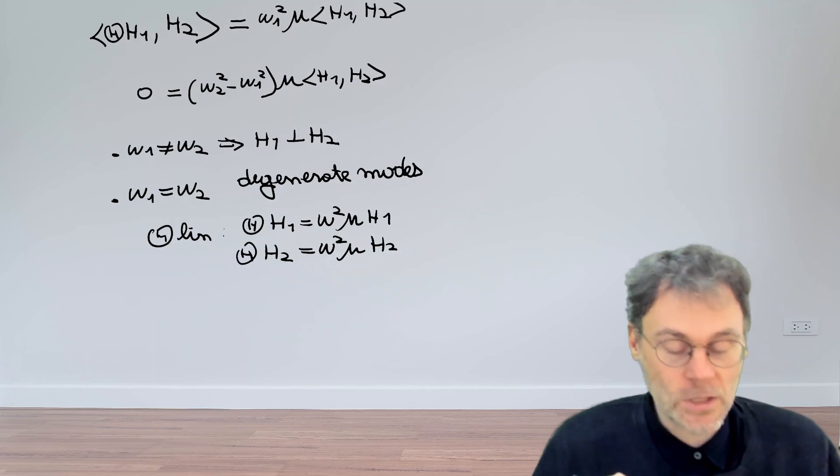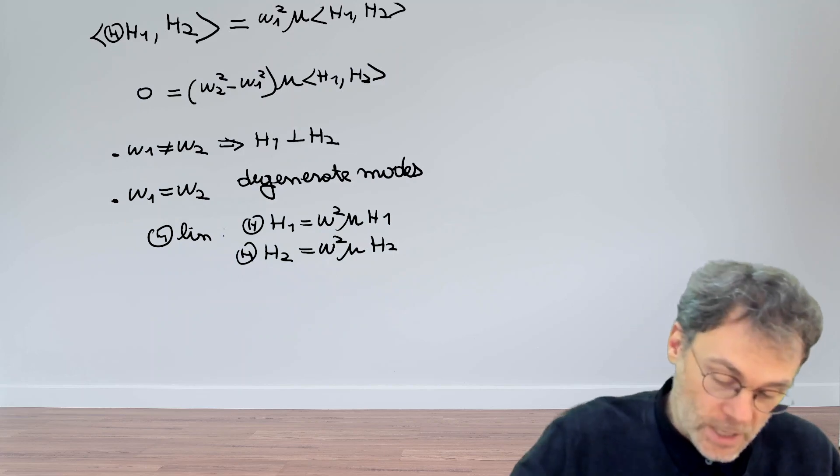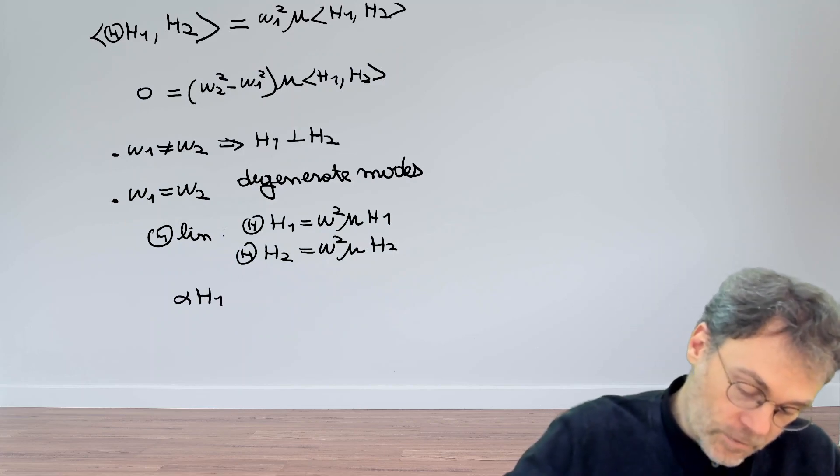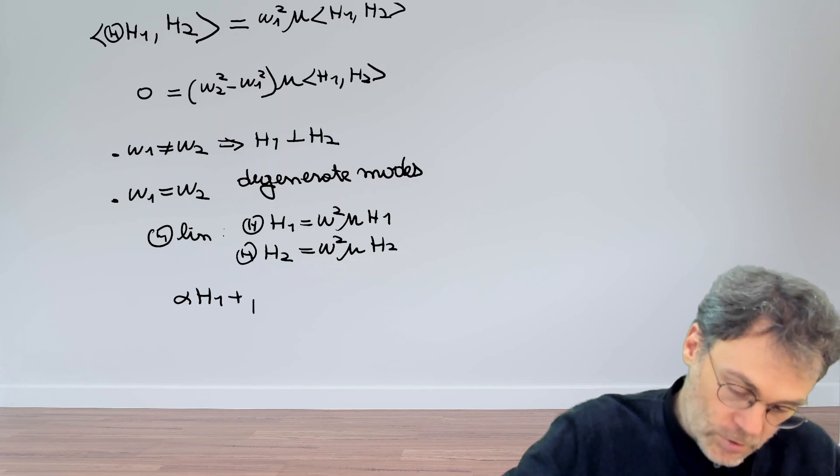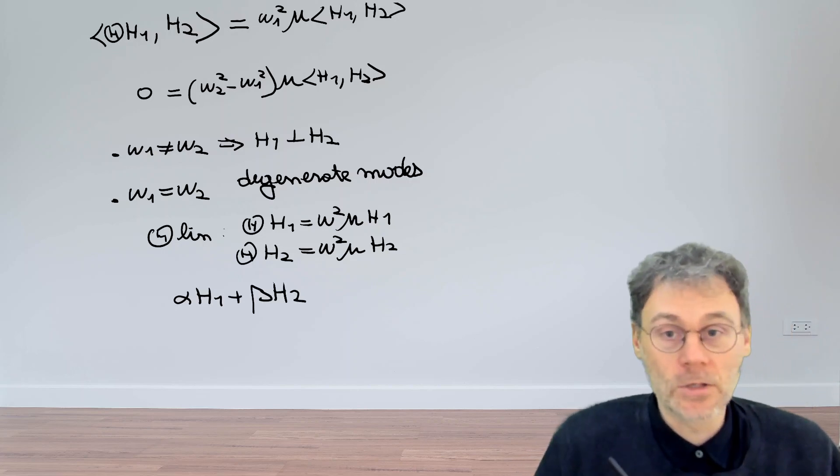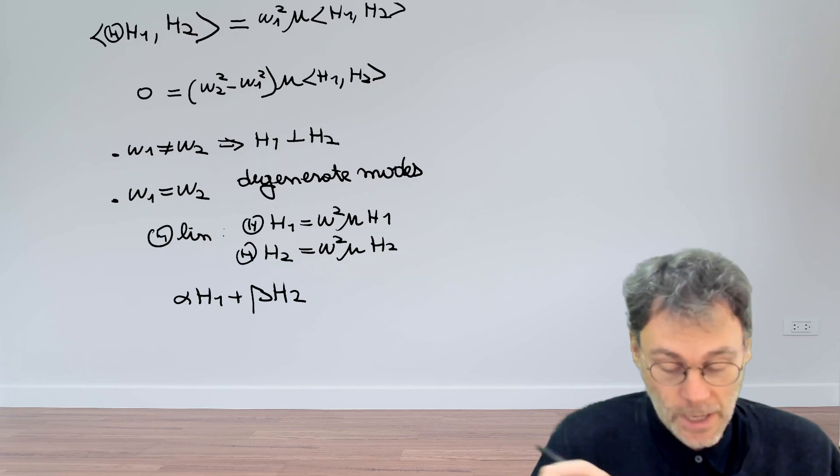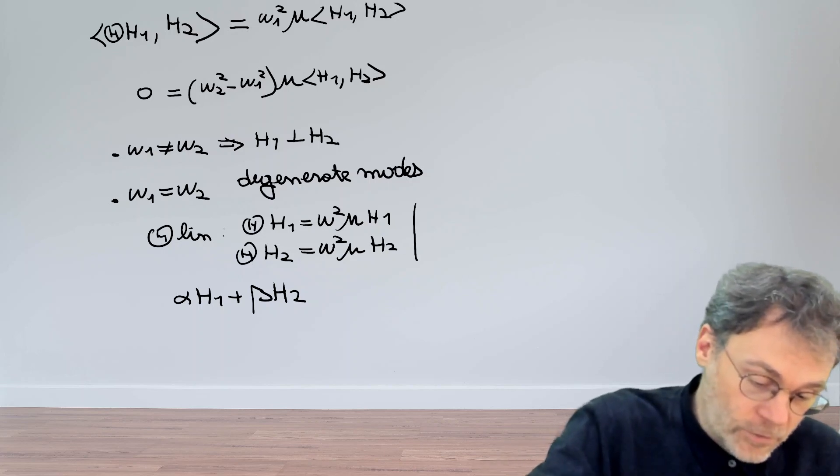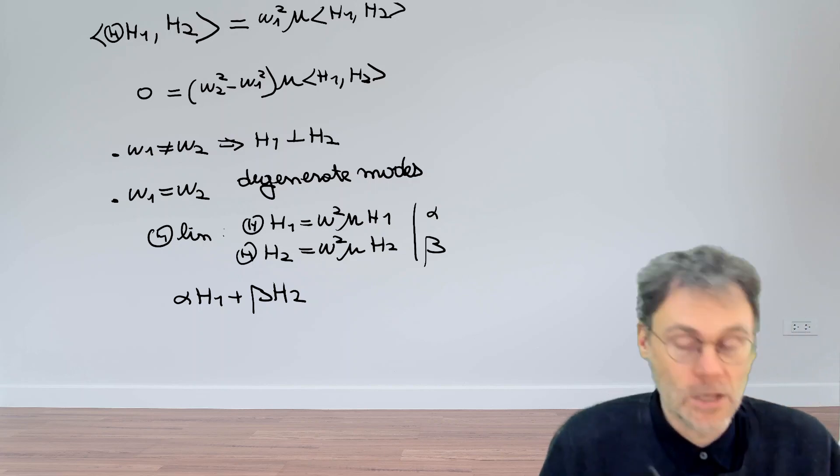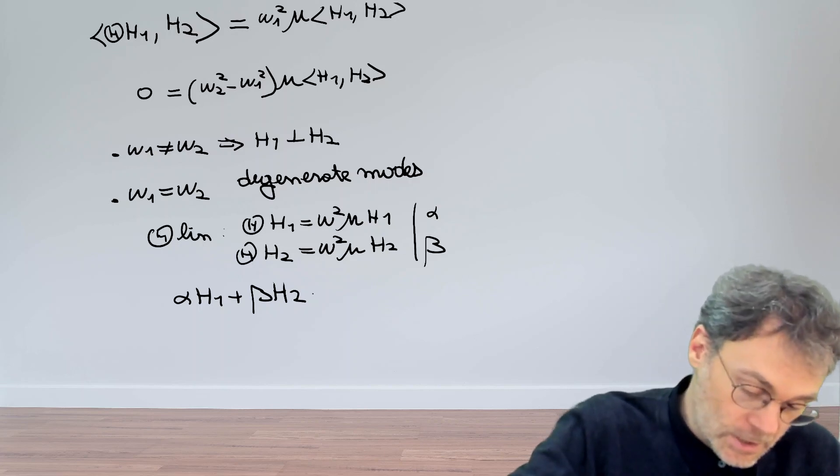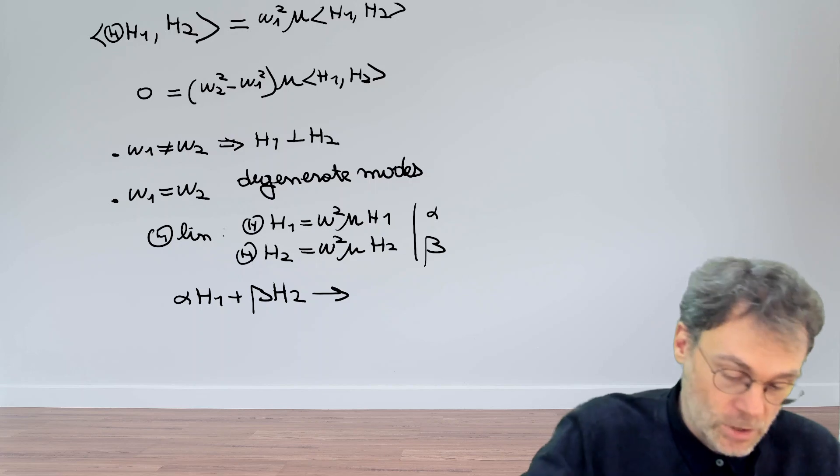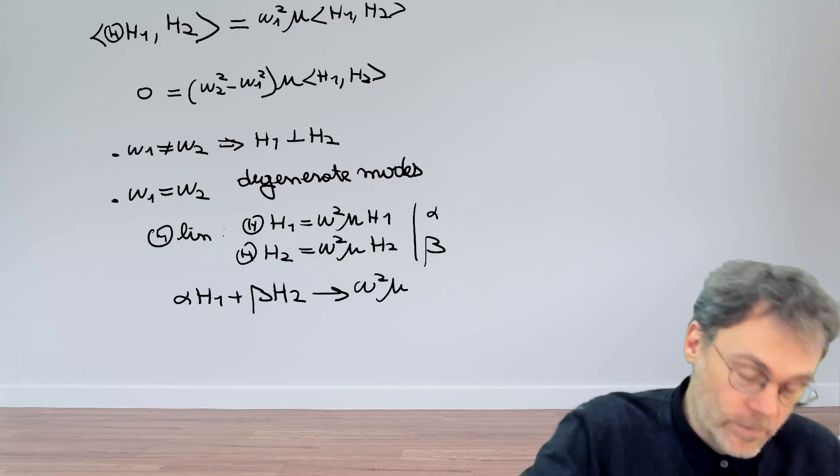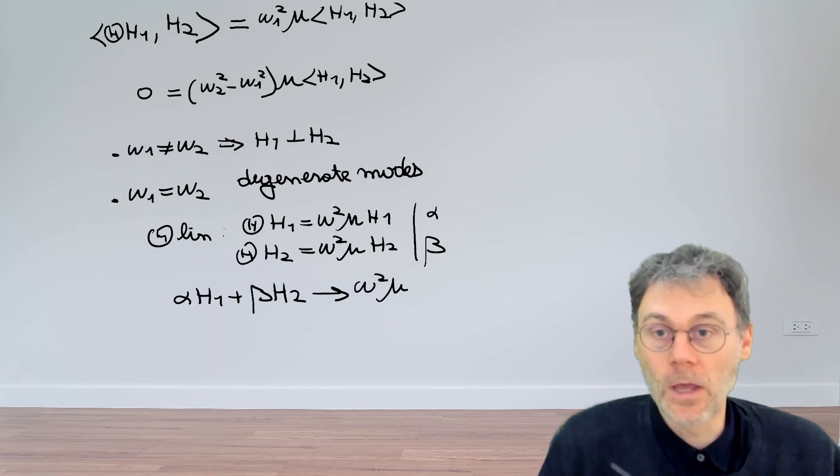then it's very easy to see that if you take a linear combination, let's say alpha H1 plus beta H2, that this is also going to be an eigenfunction with the same eigenvalue. Just multiply the first equation by alpha and the second equation by beta, and you see that this is also an eigenfunction with the same eigenvalue, omega squared mu.